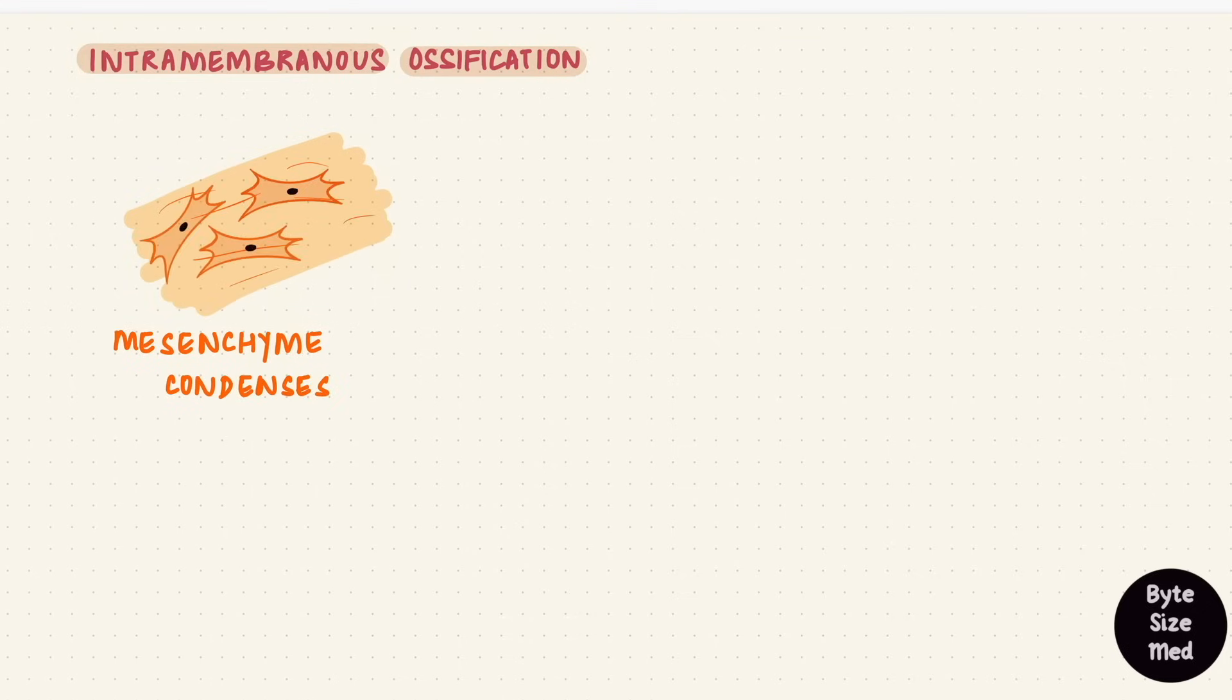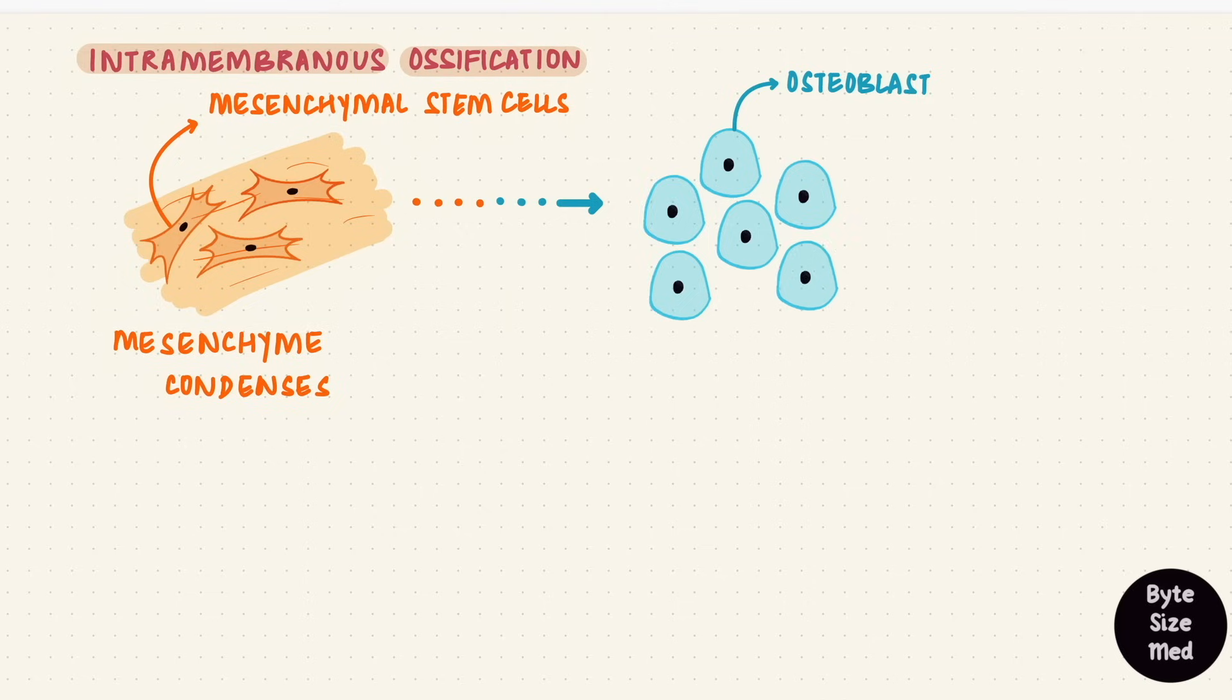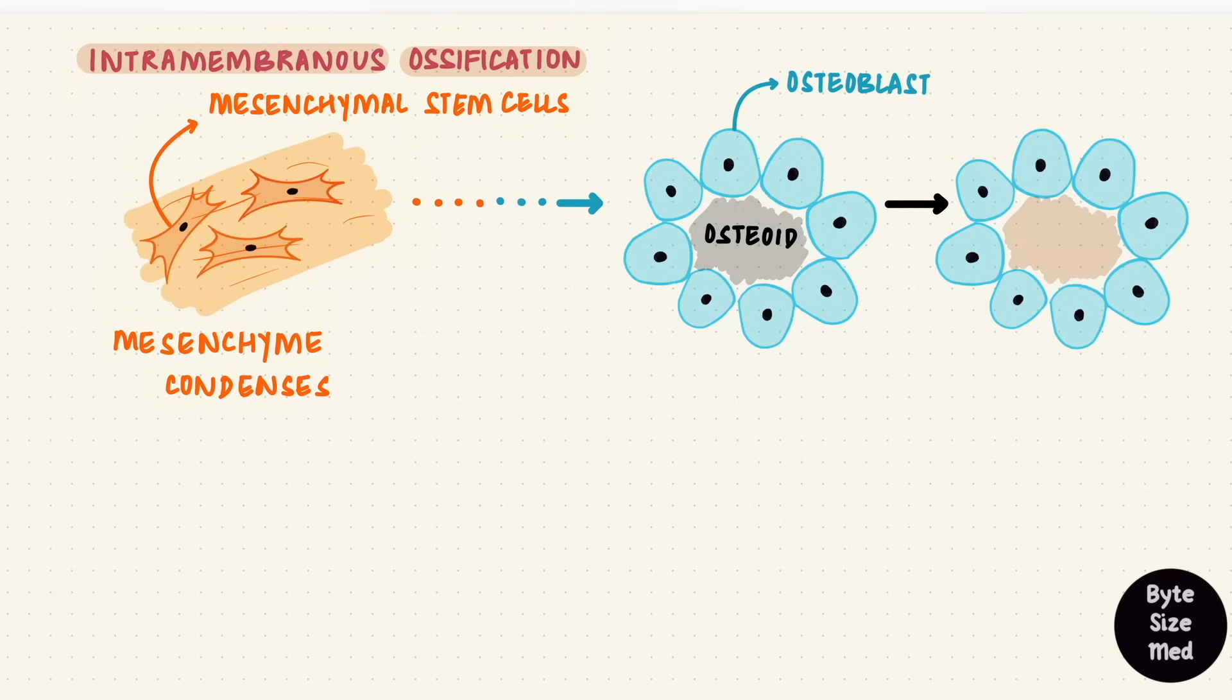First let's look at intramembranous ossification. Here, like I said before, there is no cartilage template. Bone directly forms from mesenchyme. The mesenchyme in the area where bone is gonna form condenses. The condensed mesenchyme has stem cells which differentiate into osteoblasts. That's the bone matrix forming cells. They get to work and start synthesizing osteoid, which is the matrix before mineralization has happened. Just the collagen and the ground substance. That matrix then gets calcified.